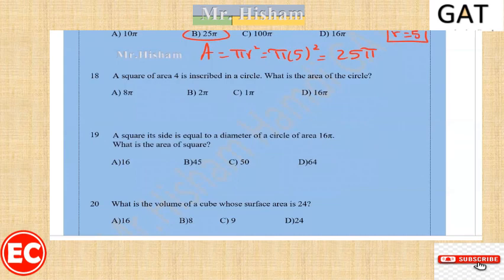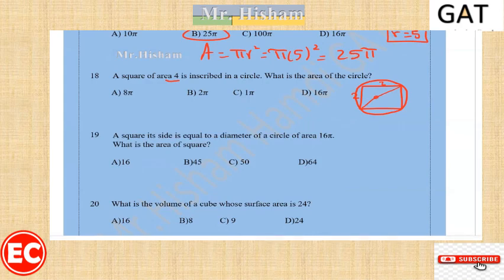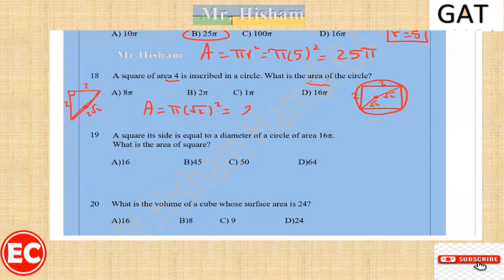Question eighteen: a square of area 4 is inscribed in a circle. The side of the square is 2. The diagonal of the square represents the diameter of the circle. Using the special right angle triangle with two equal legs of 2, the hypotenuse is 2 root 2, so the radius is root 2. The area of the circle is π times (root 2)² = 2π.